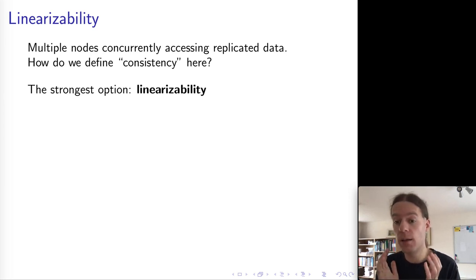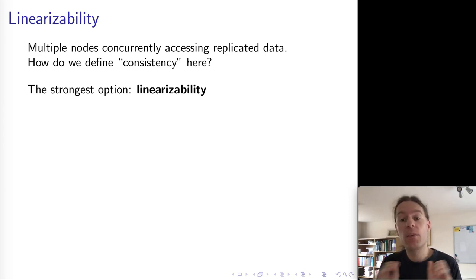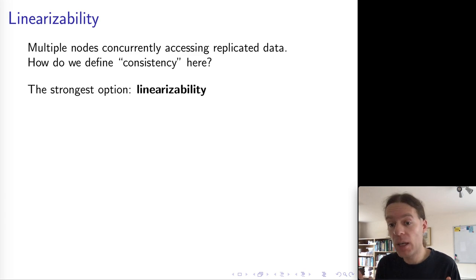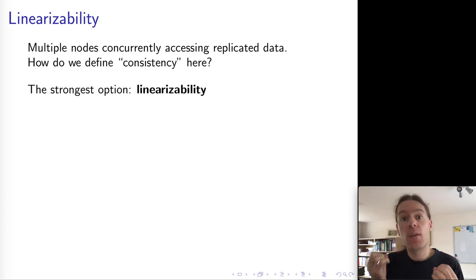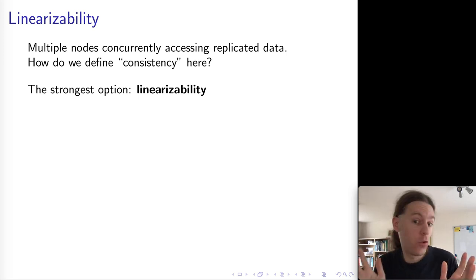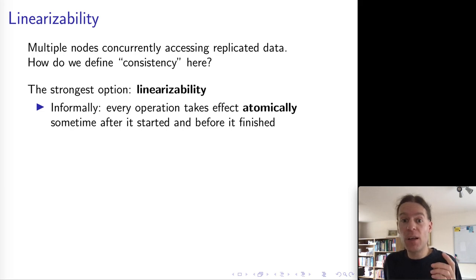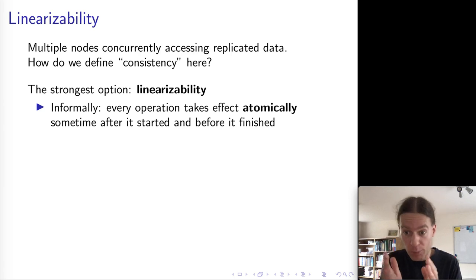Linearizability is one particular definition of consistency for concurrent systems, and it is the strongest such model in widespread use. The idea behind linearizability is that the system as a whole behaves as if it was not replicated or distributed at all — as if there was actually only a single copy of the data, and all operations happen atomically on that single copy.